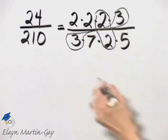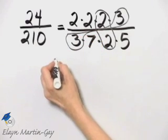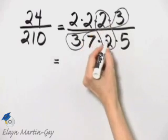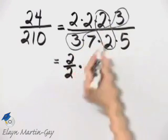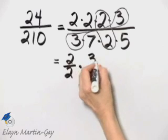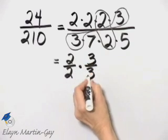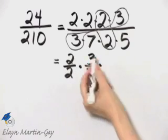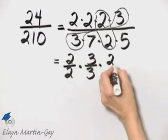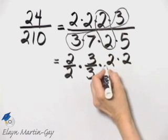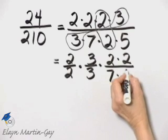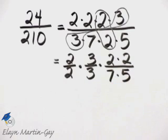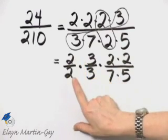Now, I'm going to write this a little differently now. I'll write this as 2 over 2 times 3 over 3, and then we'll talk about why I'm writing this way, times, I have 2 times 2 left in the numerator and 7 times 5 left in the denominator.